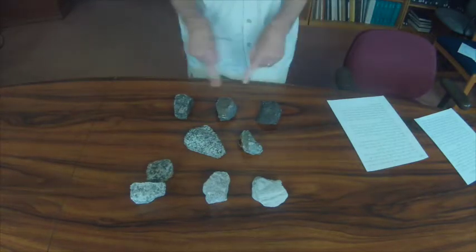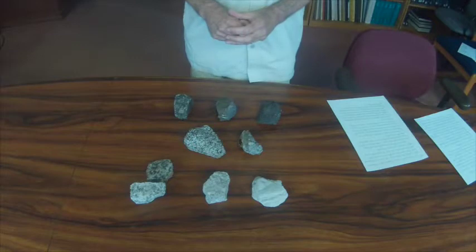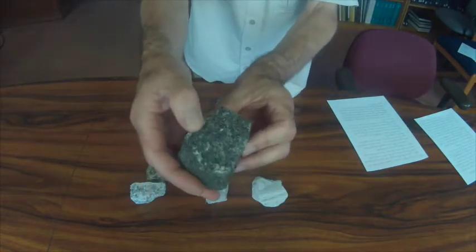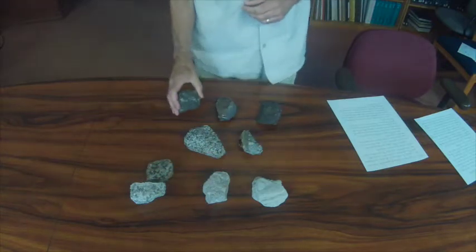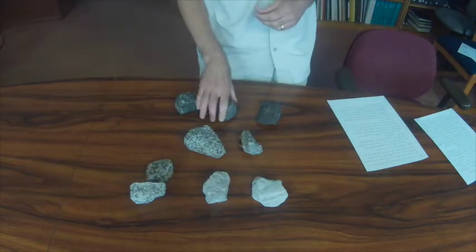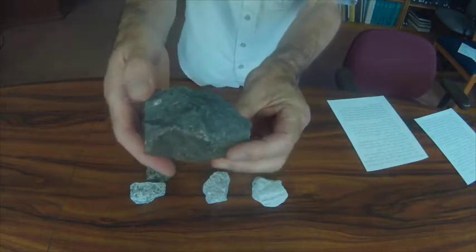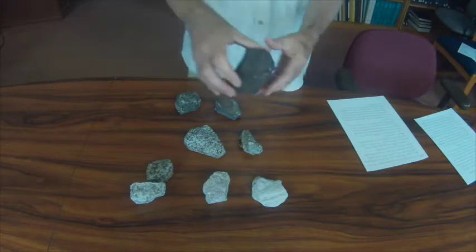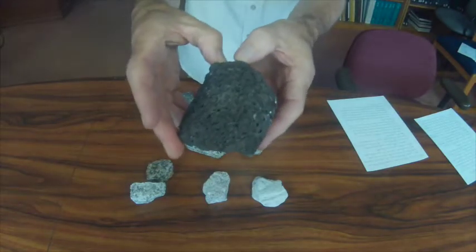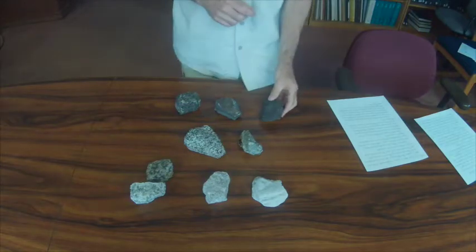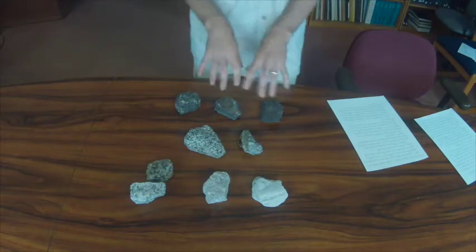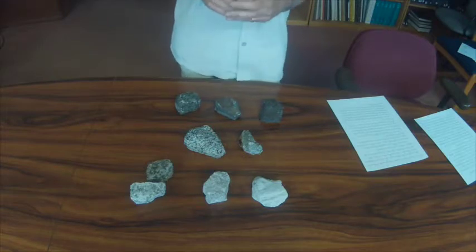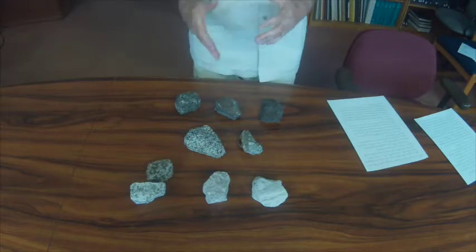Now, within this group of dark mafic rocks, you will note that some are coarse-grained, in which you can easily see the individual mineral grains. Some are fine-grained, or aphanitic, in which you cannot see the mineral grains. And some are glassy or vesicular, as in this case. Although all of these rocks have a similar chemical composition, we know from the previous video that they cooled at different rates.